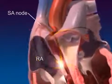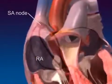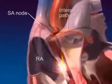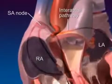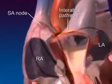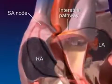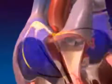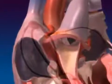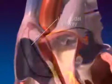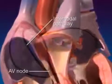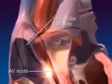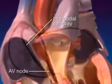The pacemaker potentials swiftly move through the interatrial pathway to the left atrium and spread throughout the atrial myocardium via gap junctions. As a result, both atria depolarize and contract as a single unit. The impulses generated by the SA node also rapidly spread through the internodal pathway to the atrioventricular, or AV, node at the base of the right atrium.